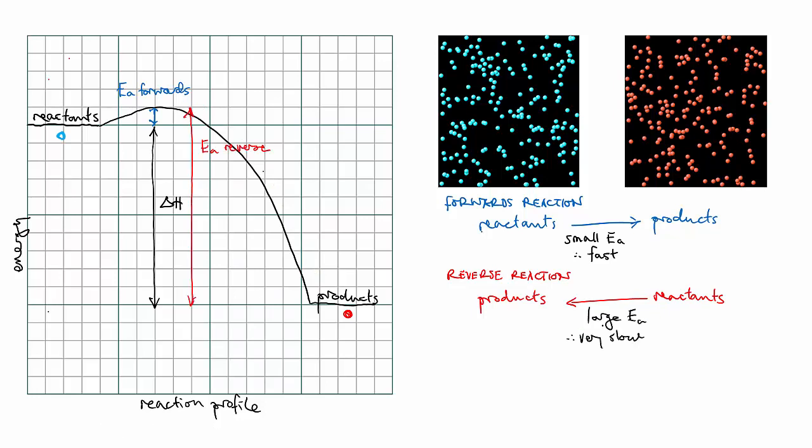A reaction with a very asymmetric energy profile like this is effectively irreversible, because it's much more likely that all the reactants will be converted into products than it is for any of the products to be converted into reactants. This is the case for most of the chemical reactions that you're familiar with, and we tend to class them as irreversible reactions.